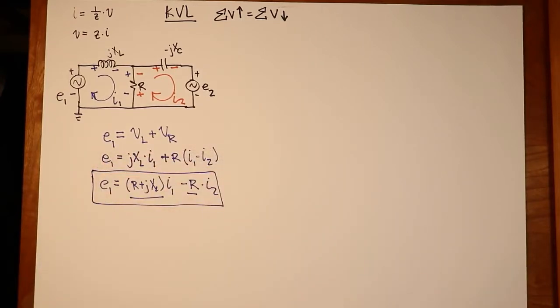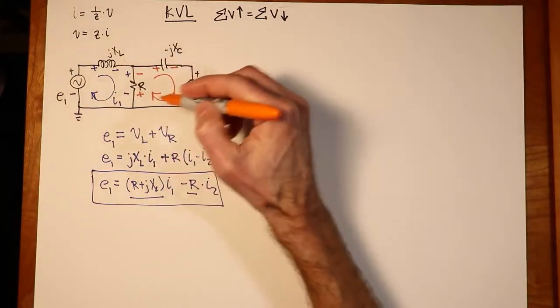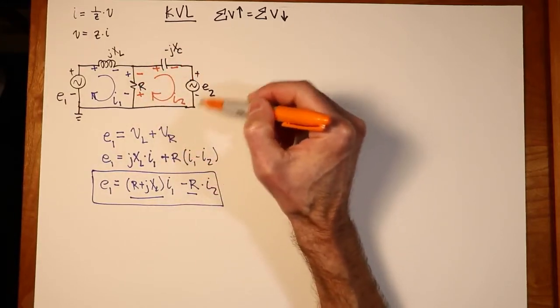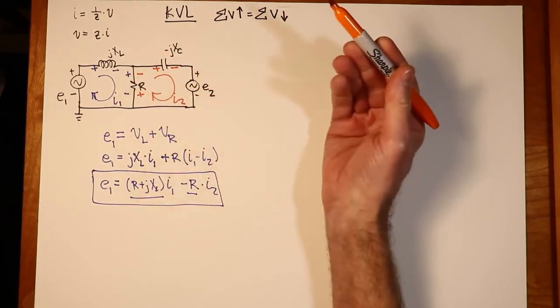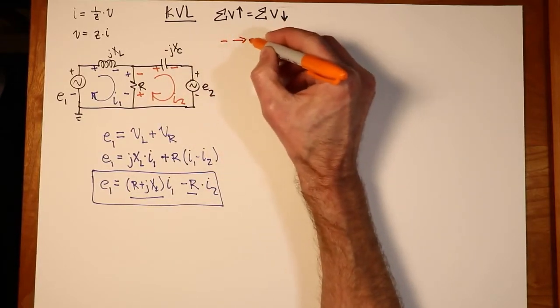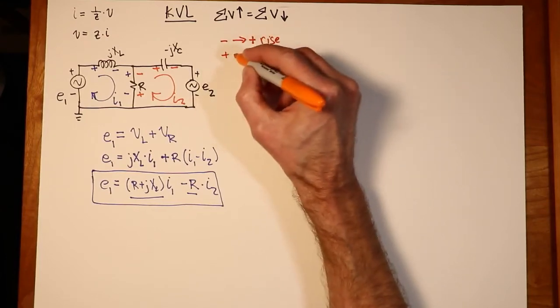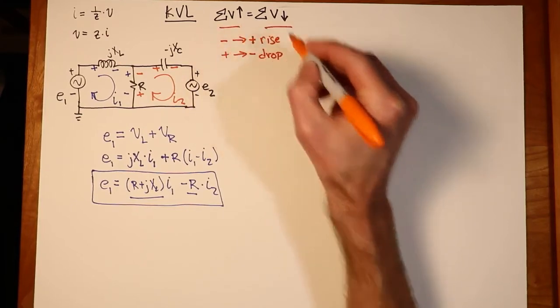Now we turn our attention over to the second loop. So I have I2. I'll go around here and do the same thing. What do I have in terms of rises and drops? Going in this clockwise direction, it's plus to minus, plus to minus, plus to minus. A way I like to approach this is to say minus to plus is going to be a rise, and plus to minus is going to be a drop.